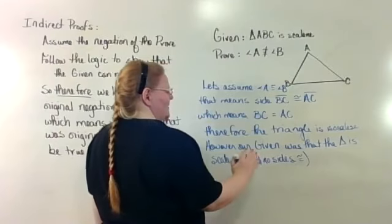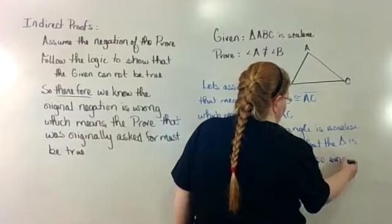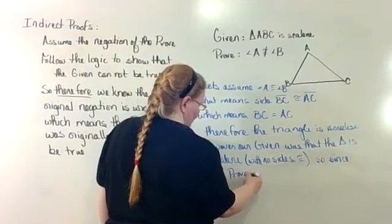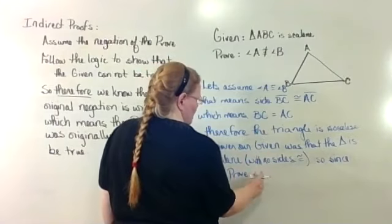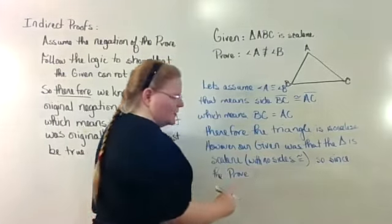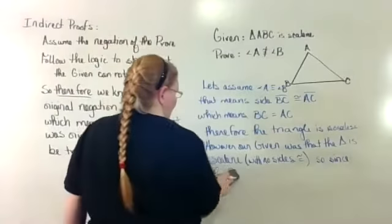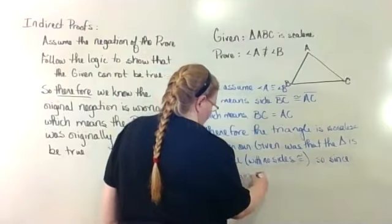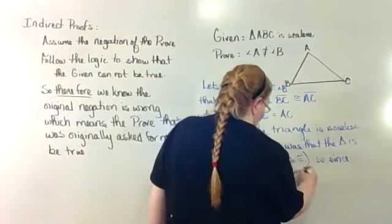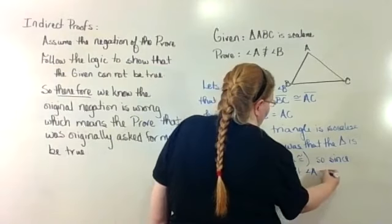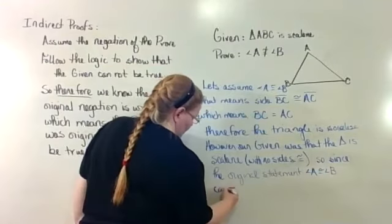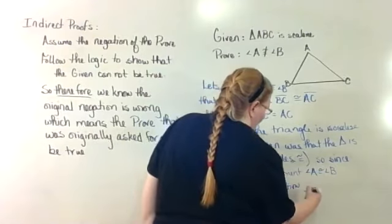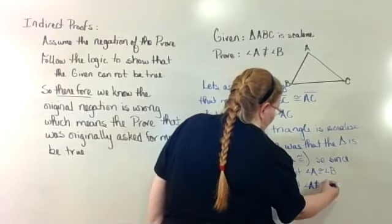Sorry about somewhere else in my head for a second. So since the proof can't be true, since the proof... No. Let me say it a different way. Original statement. Angle A is congruent to angle B. Can't be true.